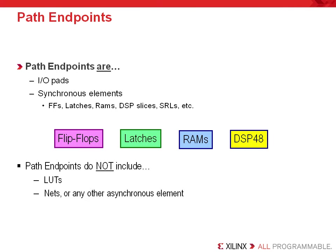Before we proceed to introduce you to the global timing constraints and the delay paths they cover, it's very important that you understand the possible path endpoints you can have. Once you start to understand how the implementation tools look at your design in terms of path endpoints, making the best timing constraints is very easy. While global timing constraints are very simple, understanding possible path endpoints is useful when you learn about path-specific timing constraints. Simply put, path endpoints are IOPads and synchronous elements.